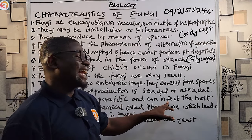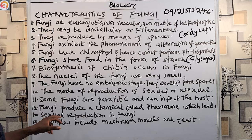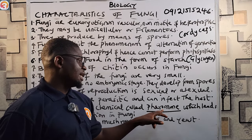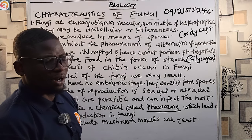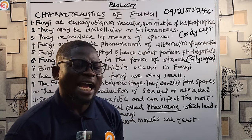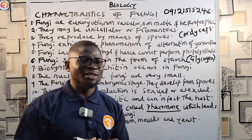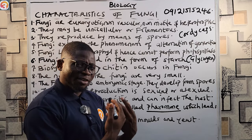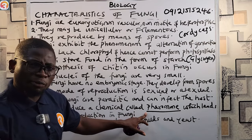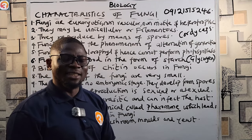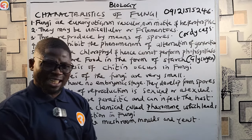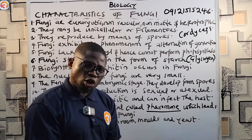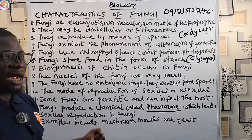Number fifteen: fungi produce a chemical called pheromone — P-H-E-R-O-M-O-N-E — which leads to sexual reproduction in fungi. Like humans have oral communication, fungi do not have that kind of verbal communication, so what they do is use pheromones. For sexual reproduction, they release this chemical called pheromone, and other fungi understand it. It is used to establish communication between them and other species of fungi, to install communication and behavior changes in the fungi or species.